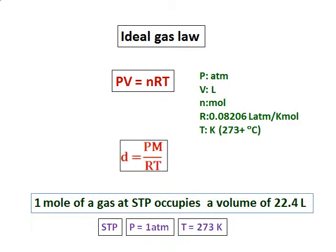A little rearrangement of the ideal gas equation, PV equals nRT, gives the second equation which you have written there, d equals PM over RT, where d is the density, P is the pressure, M is the molar mass, R is the gas constant, and T is the temperature.